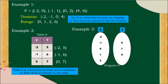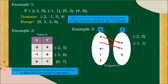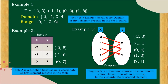Example 3: Diagram A has x-coordinates and y-coordinates. Make an arrow to form the pairs: (negative 2, 0), (negative 1, 1), (0, 4), (1, 0), and (2, 1). Example 3 is also a function because no x-coordinate or first element repeats when arrowing to the y-coordinate or second element.